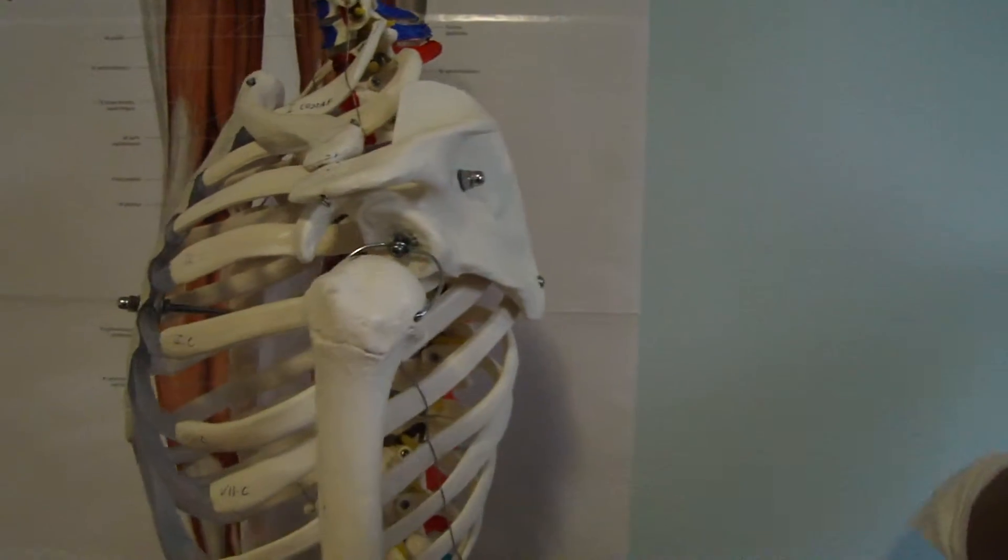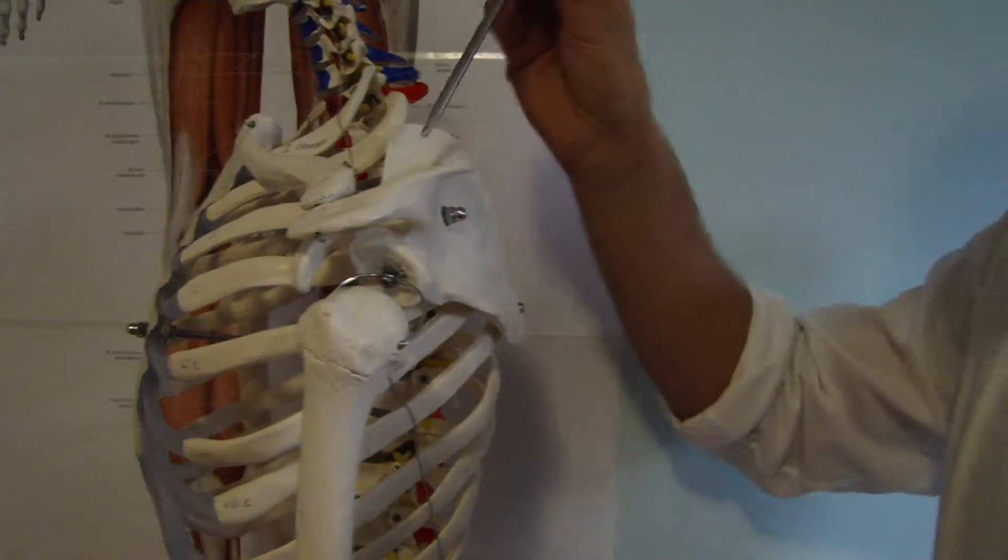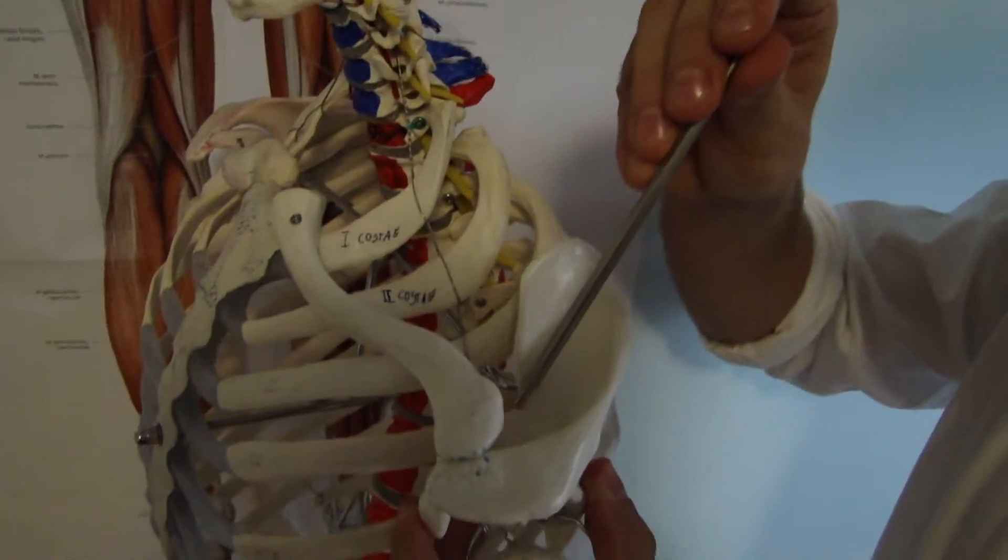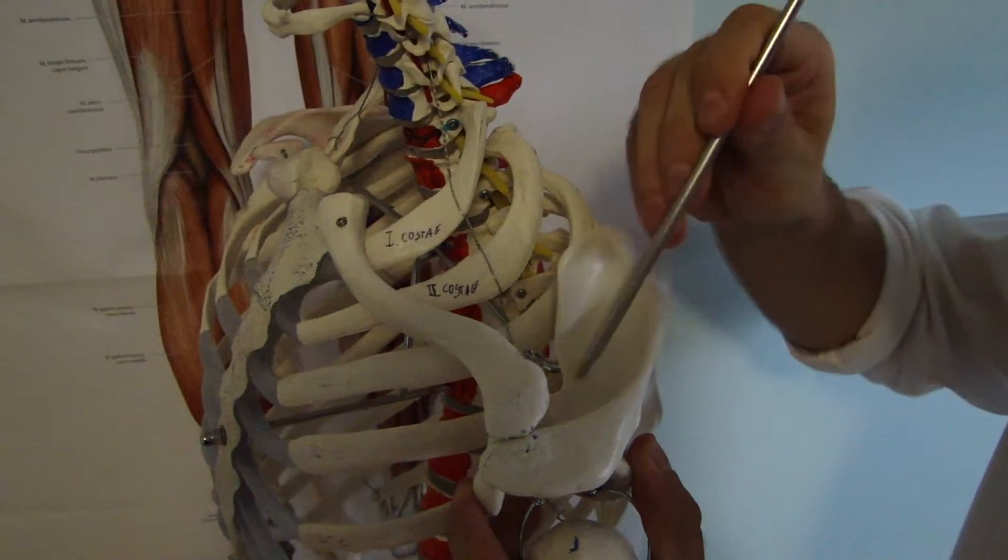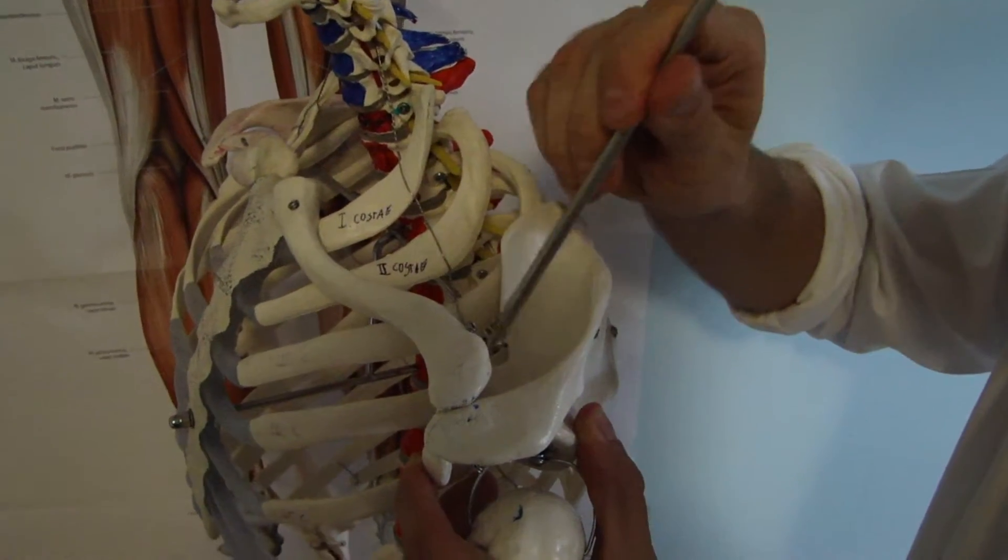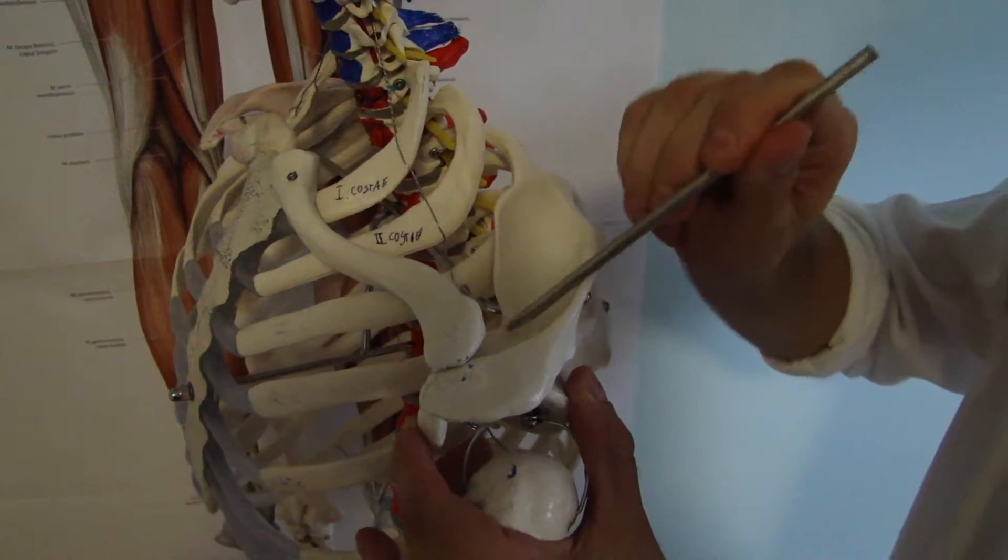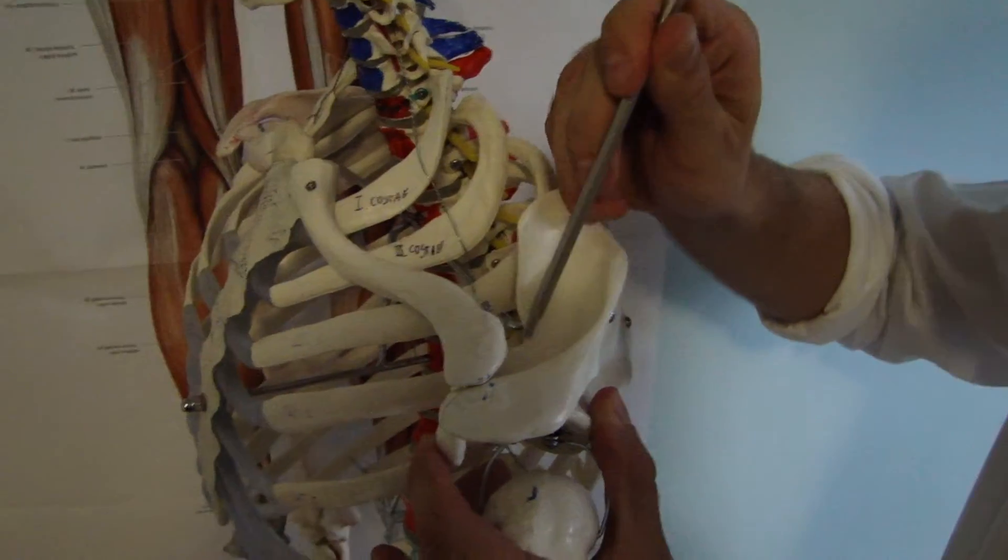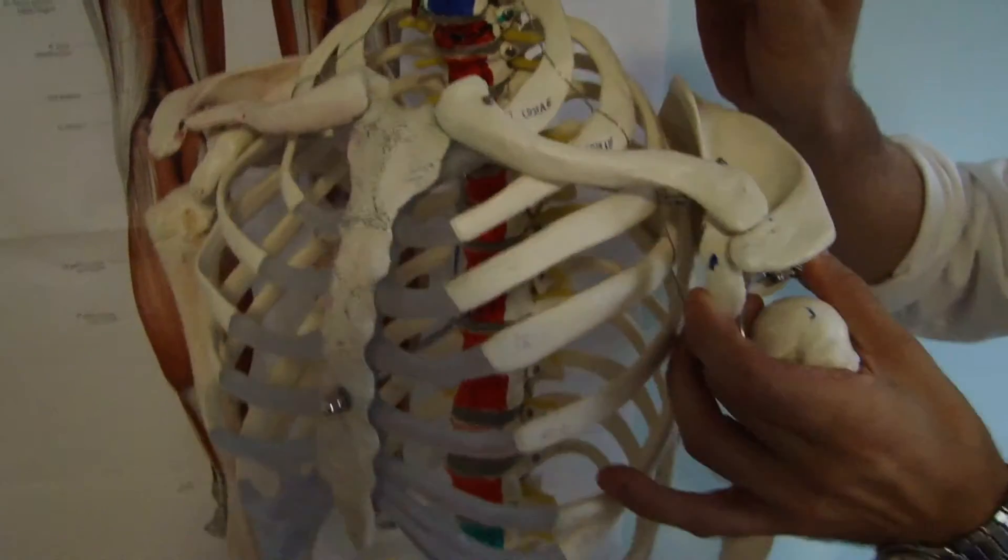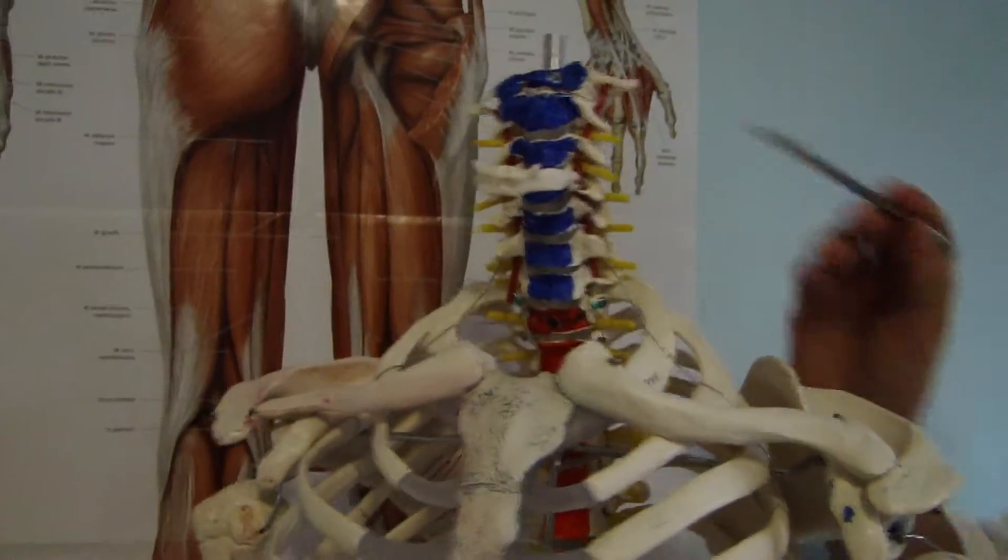And then here we have superior transverse scapular ligament which basically forms suprascapular foramen and through it goes suprascapular nerve. It's also insertion for omohyoid muscle which depresses hyoid bone.